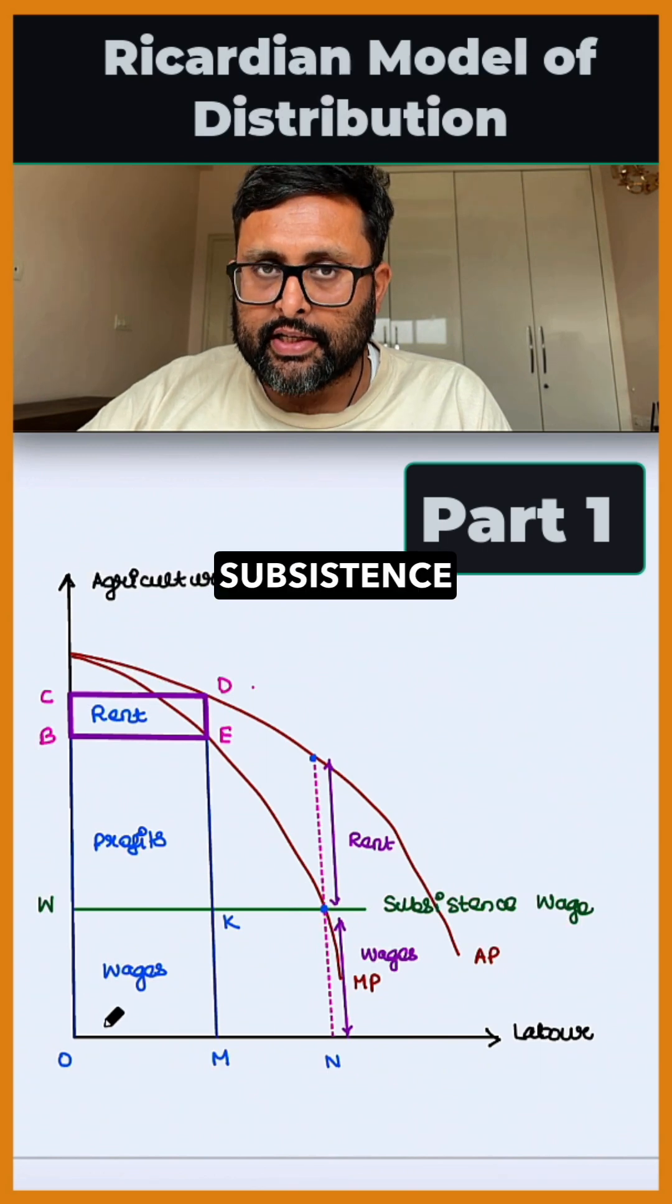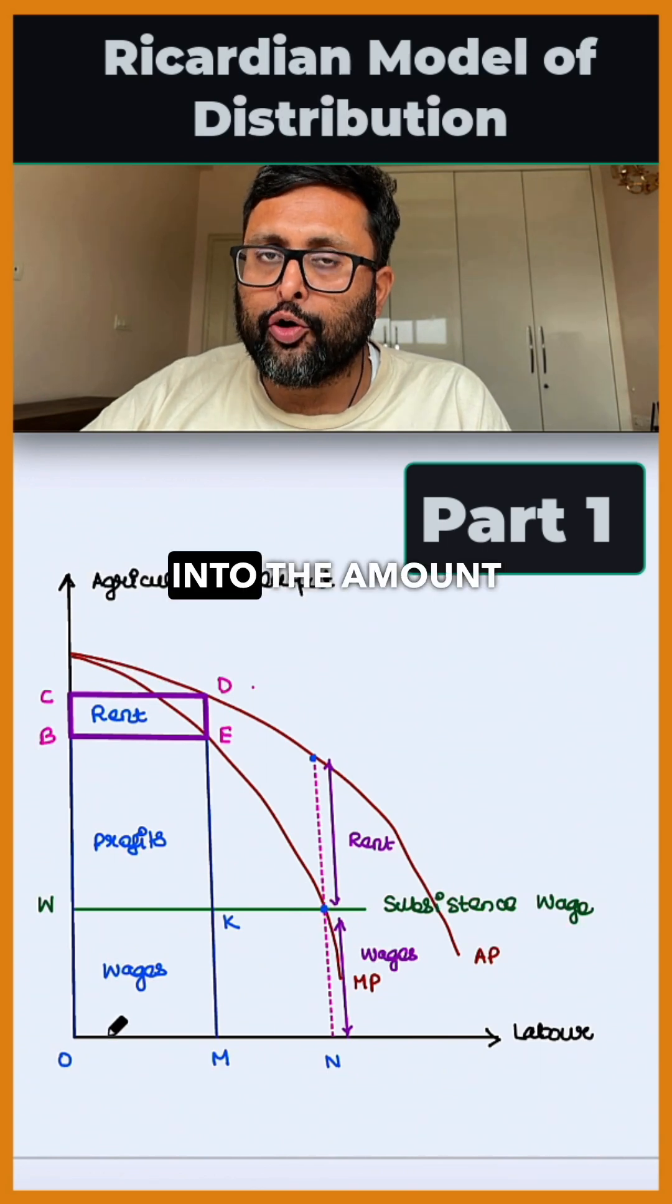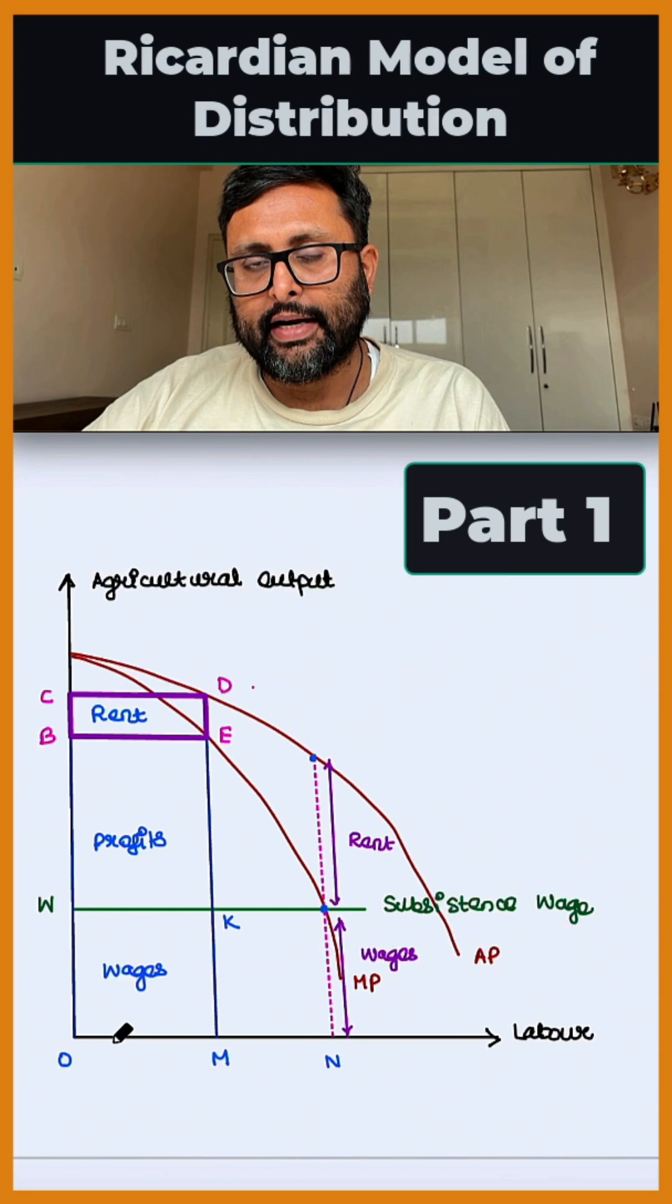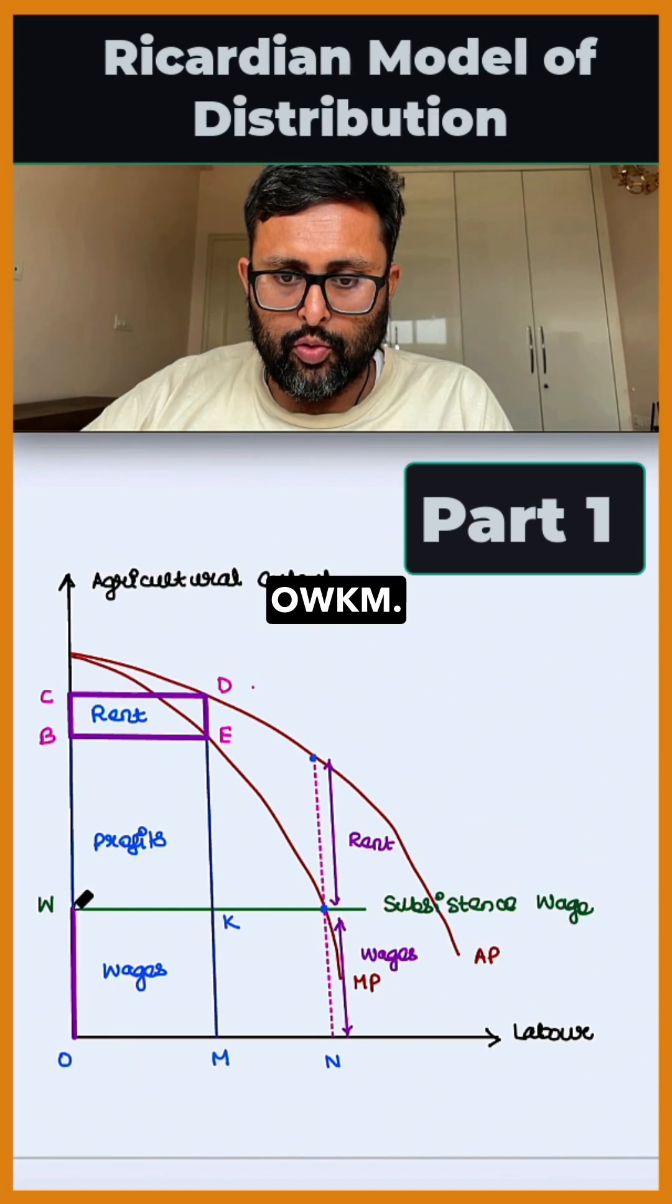Total wages are subsistence wage per labor times the amount of labor. That is given by OWKM.